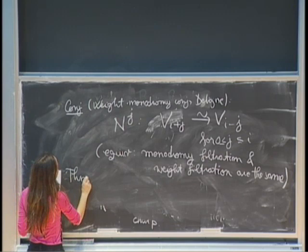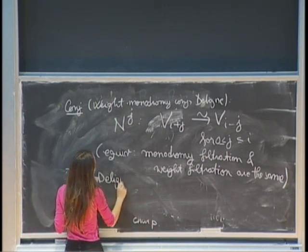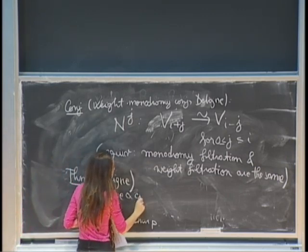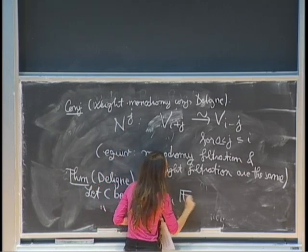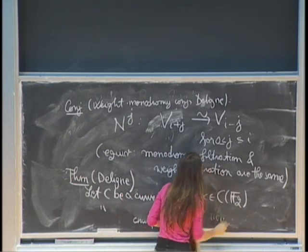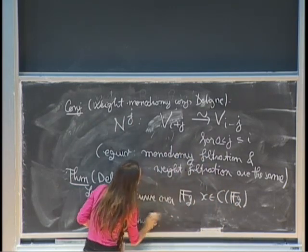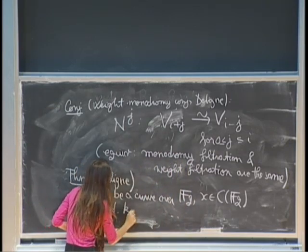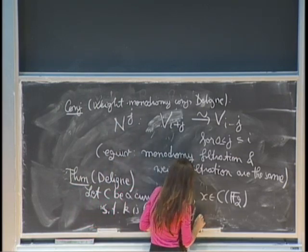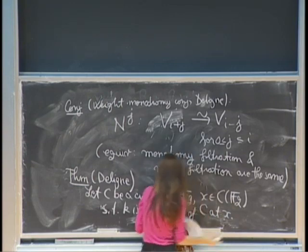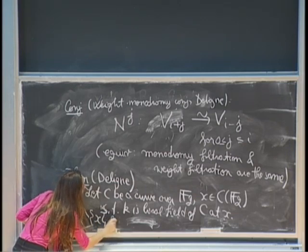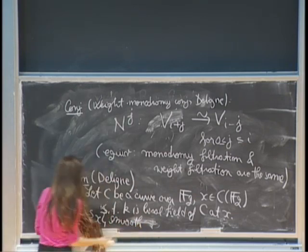Let me state what Deligne proved. Let C be a curve over F_q. When x is a point of this curve such that k is the local field of the curve at x, and you have x over C minus x smooth outside this point, then x_k satisfies the weight monodromy conjecture.